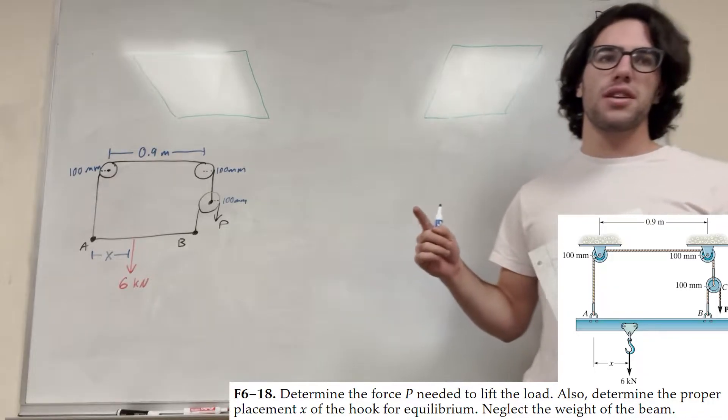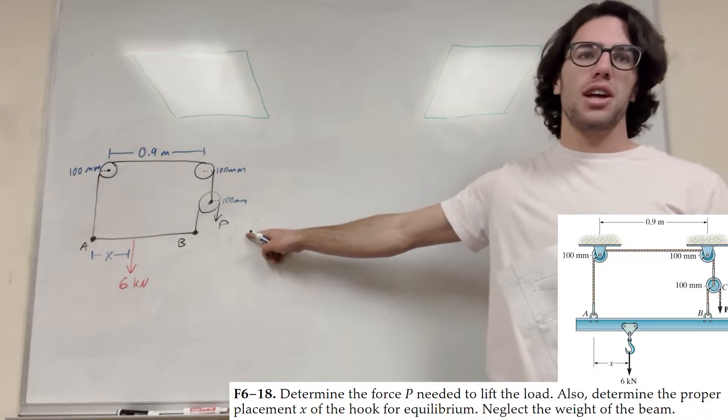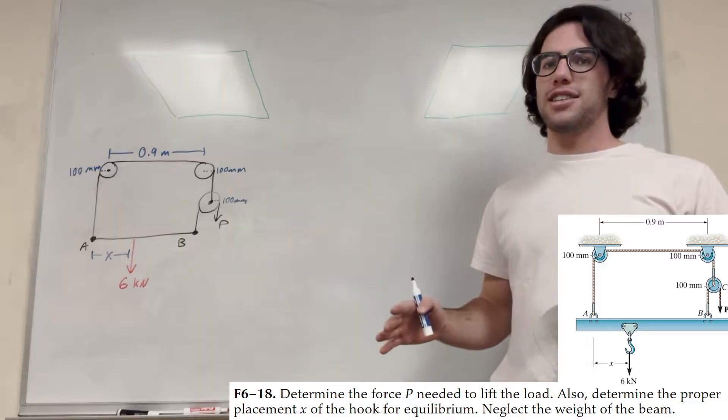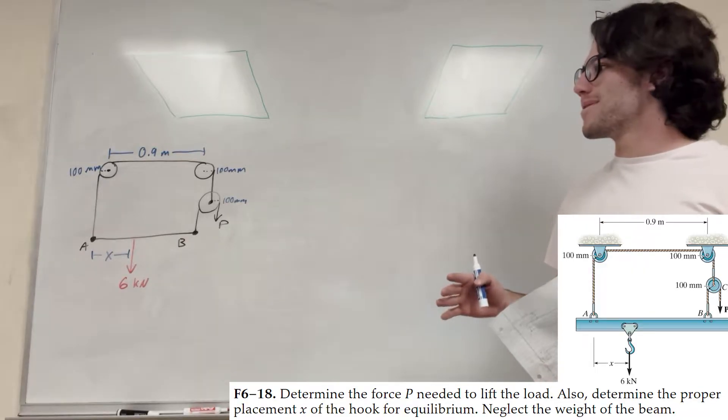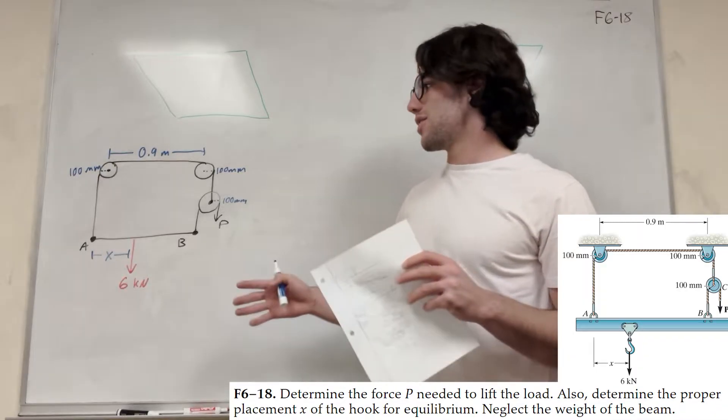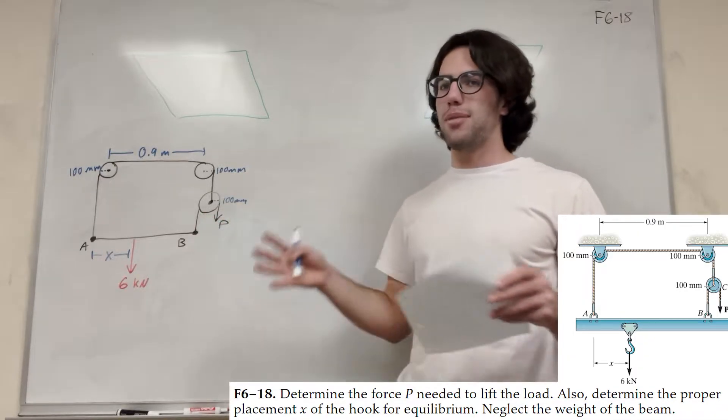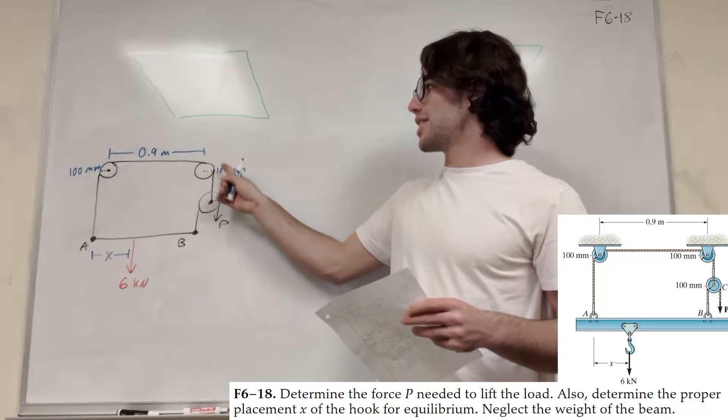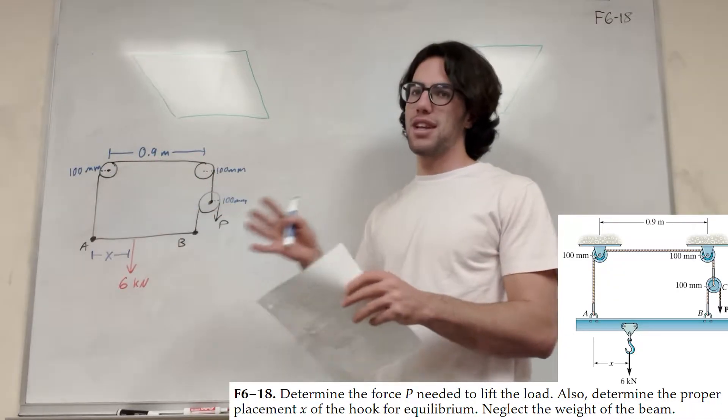So first of all, we're going to find what force P is needed in order to hold this system in the way that it is. So let's go ahead and do that. So what do we know about this? Well, we know that tension is kind of conserved. So if you pull here, you pull here, it's the same tension. Same thing around this whole thing. The tension in this rope and this rope and this rope is going to be the same.